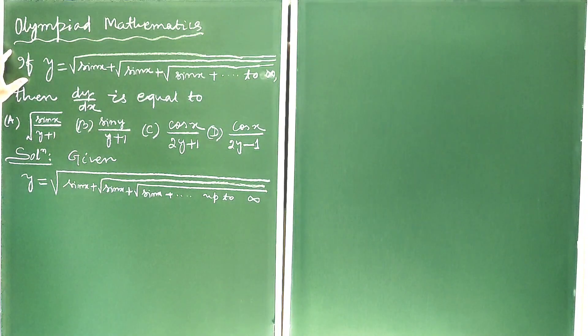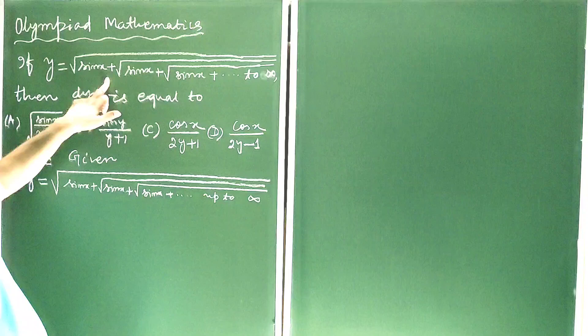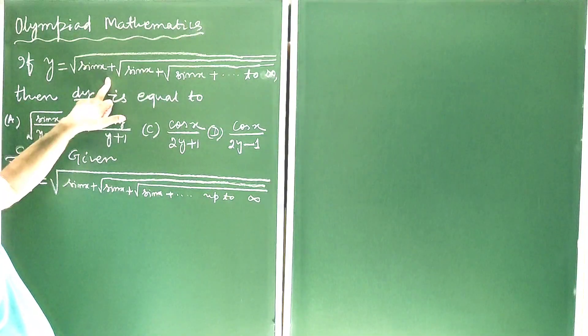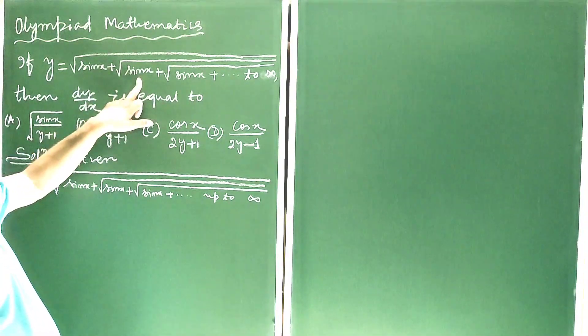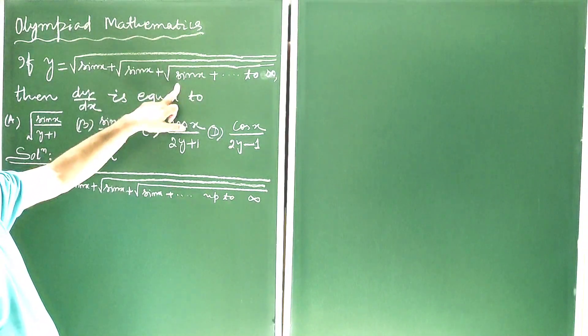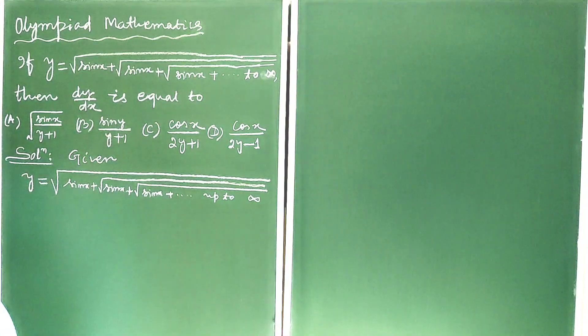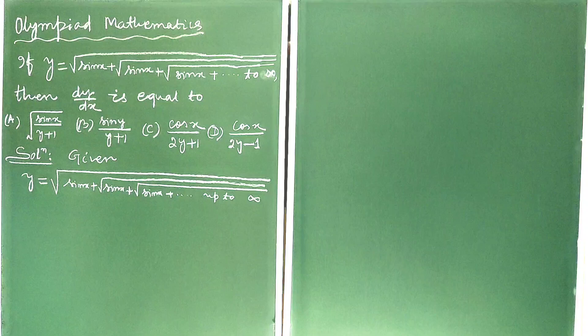Here the question is: if y is equal to square root of sin x plus square root of sin x plus square root of sin x plus dot dot dot up to infinity, then dy by dx. Choices are given and we have to find the correct answer.